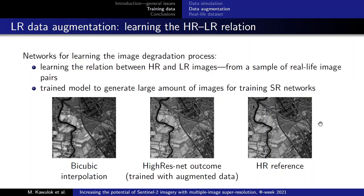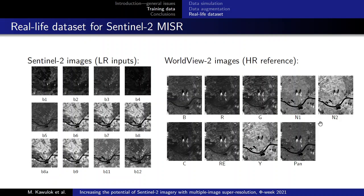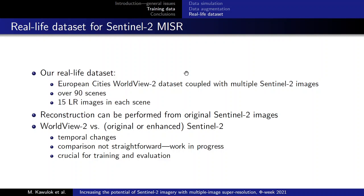We have also prepared a real-life dataset, which is composed of Sentinel-2 images that are treated as low-resolution input, and they are coupled with high-resolution WorldView imagery. We have prepared over 90 scenes, and in each scene we have 15 low-resolution images coupled with one high-resolution reference. We have already performed reconstruction from these Sentinel-2 images, and now we are trying to use that dataset for training and evaluation, which is not straightforward, as it is not easy to compare WorldView against Sentinel-2 — so we have to work on the image similarity metrics.